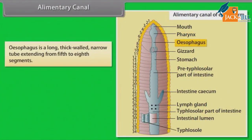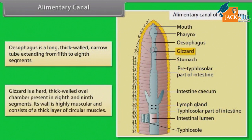The oesophagus is a long, thick-walled, narrow tube extending from the fifth to the eighth segment. The gizzard is a hard, thick-walled, oval chamber present in the eighth and ninth segments. Its wall is highly muscular and consists of a thick layer of circular muscles.